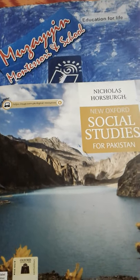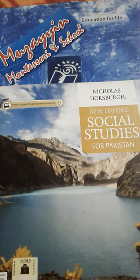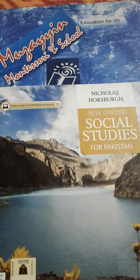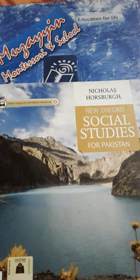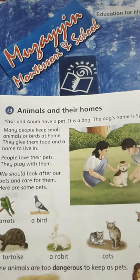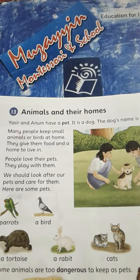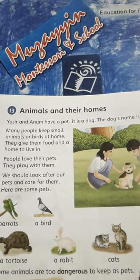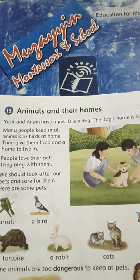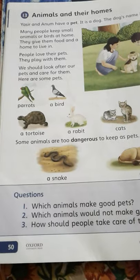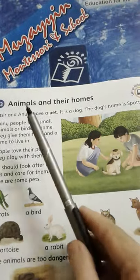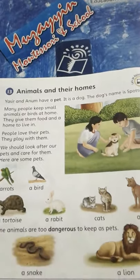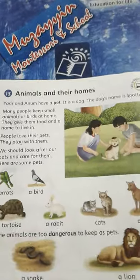Assalamu alaikum and welcome to Musayun Montessori and School's Social Studies online class. In today's SST online class, we will study lesson number 13 of unit number 6. Kindly open page number 50 and write the date and CW on the top. Listen carefully and underline the difficult words.